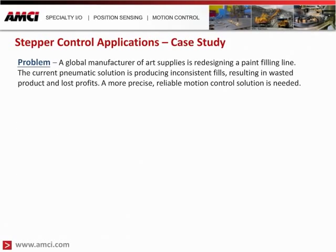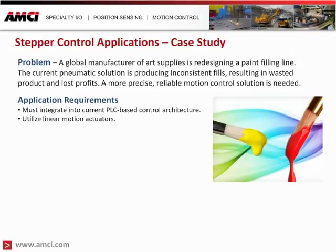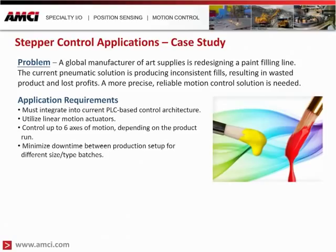Our first case study involves a global manufacturer of art supplies that needed to redesign a paint filling line. The current pneumatic solution was producing inconsistent fills, resulting in wasted product and lost profits. A more precise, reliable motion control solution was needed. Application requirements included easy PLC integration, compatibility with an already-selected linear actuator and existing stepper motors, multi-axis control for six colors, and the goal to reduce downtime, streamline setup, eliminate improper bottle filling — all at an affordable price.